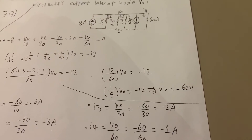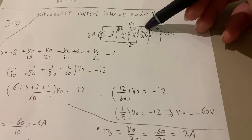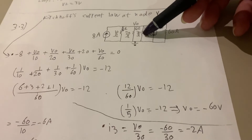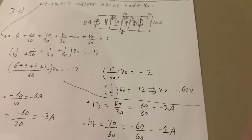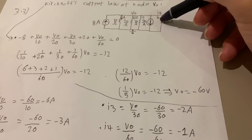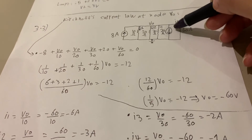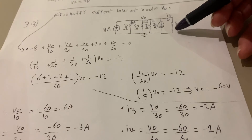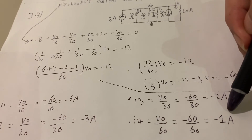I3 is equal to V0 over 30 ohms, which is equal to negative 2 amperes. For I4, we have V0 over 60 ohms, which is equal to negative 60 over 60, which is equal to negative 1 ampere.